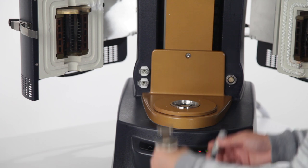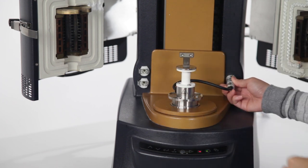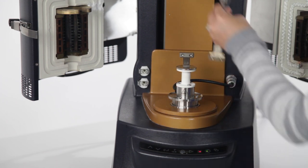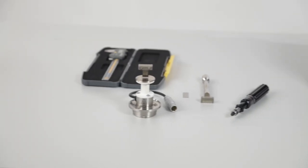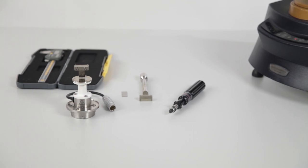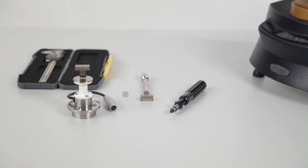When mounted on the DHR, the linear film tension clamp is used in tandem with the environmental test chamber for temperature control. The kit includes the upper and lower fixtures, alignment steel shim, torque wrench, and calipers.